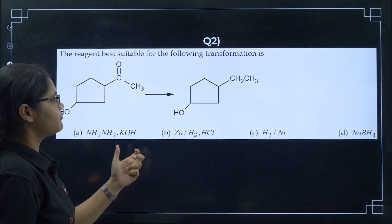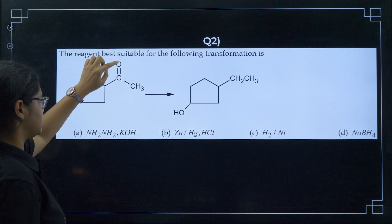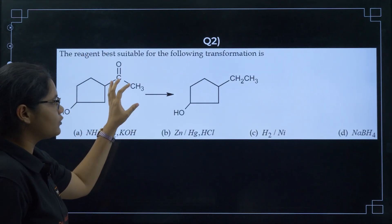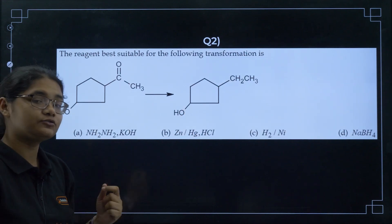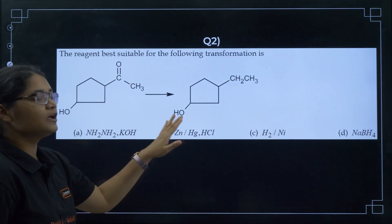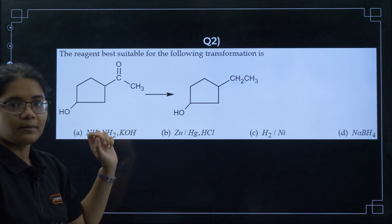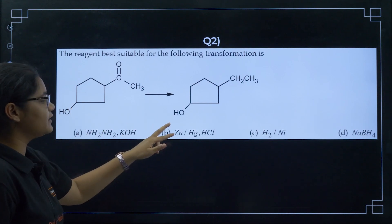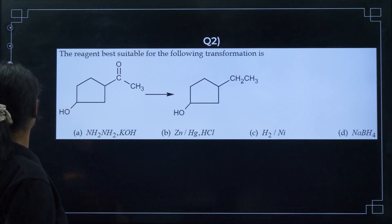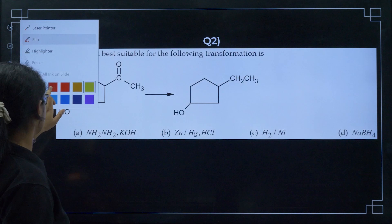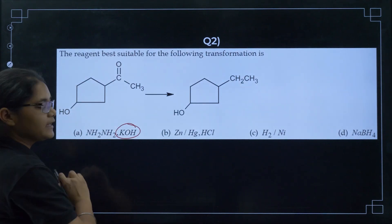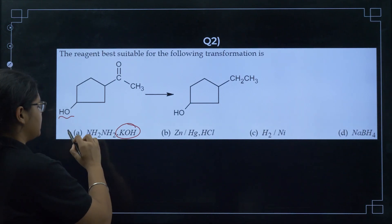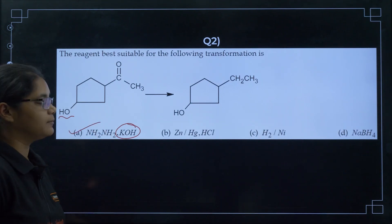Next, the best reagent for the following transformation. You can see here the CO group is reduced to CH2, so aldehydes or ketones getting reduced to hydrocarbons. The reagents used for this process are either Wolff-Kishner or Clemmensen reduction. This is an OH medium, acidic medium, so we need a basic medium. Basic medium is present in NaOH. Option A here.